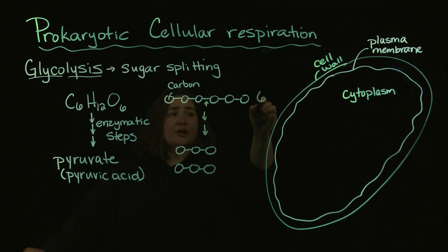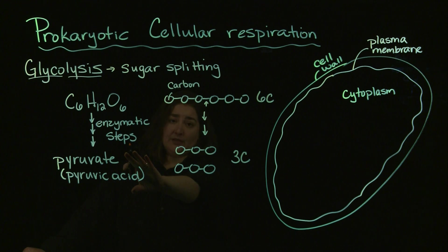So we're going to start out with six carbons and break those six carbons into three carbons. Those three carbon molecules are your pyruvate or your pyruvic acid.